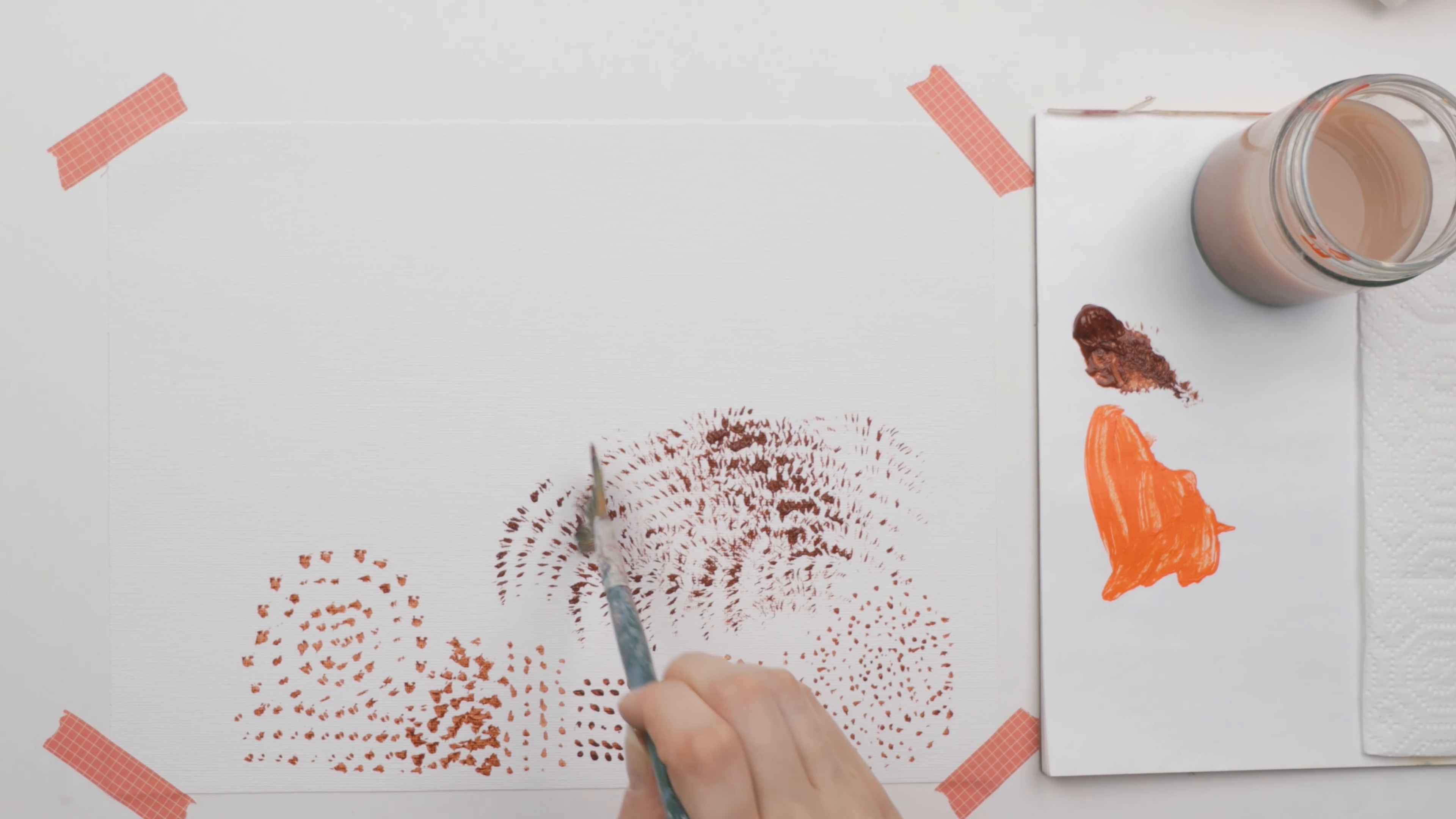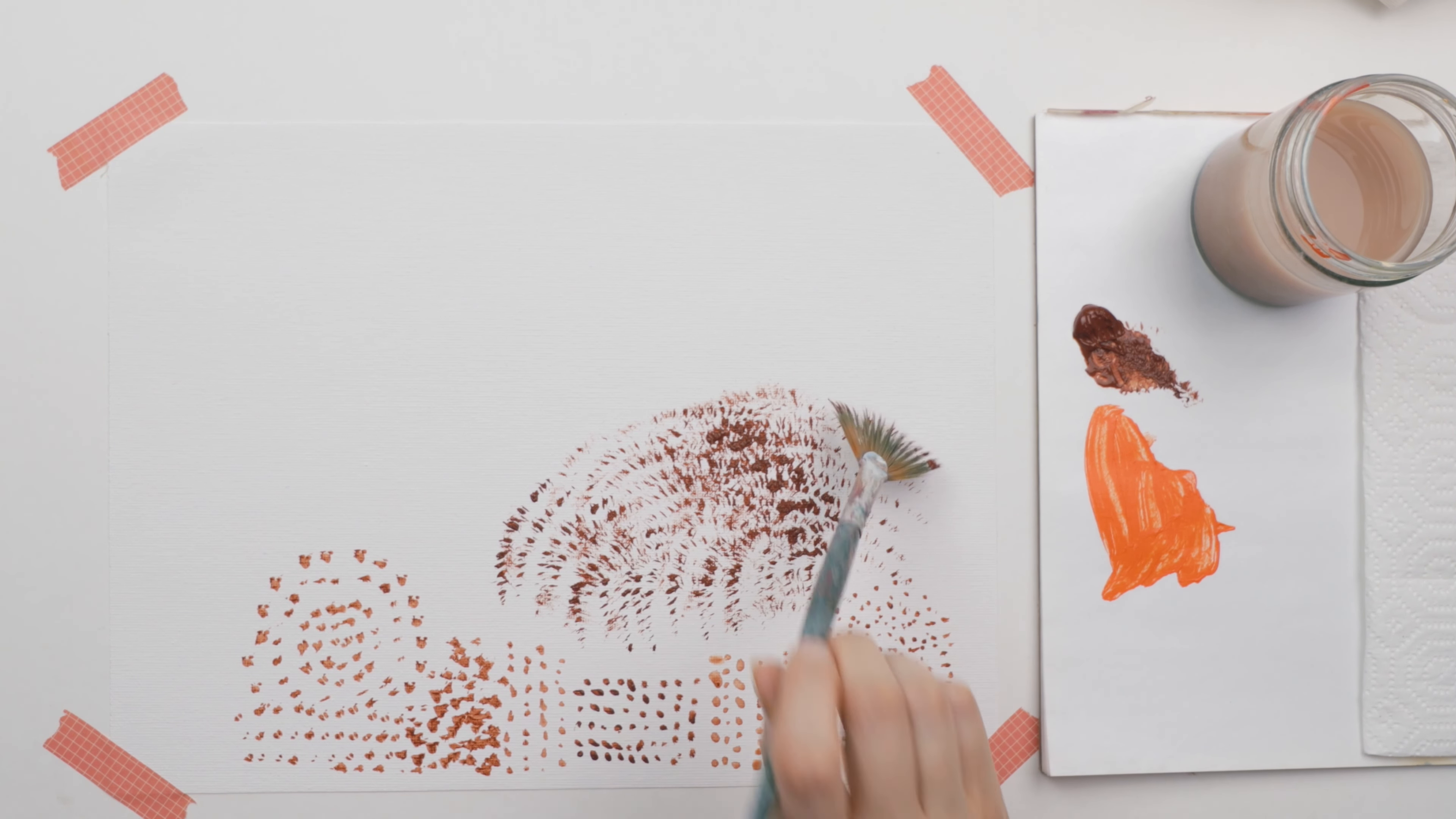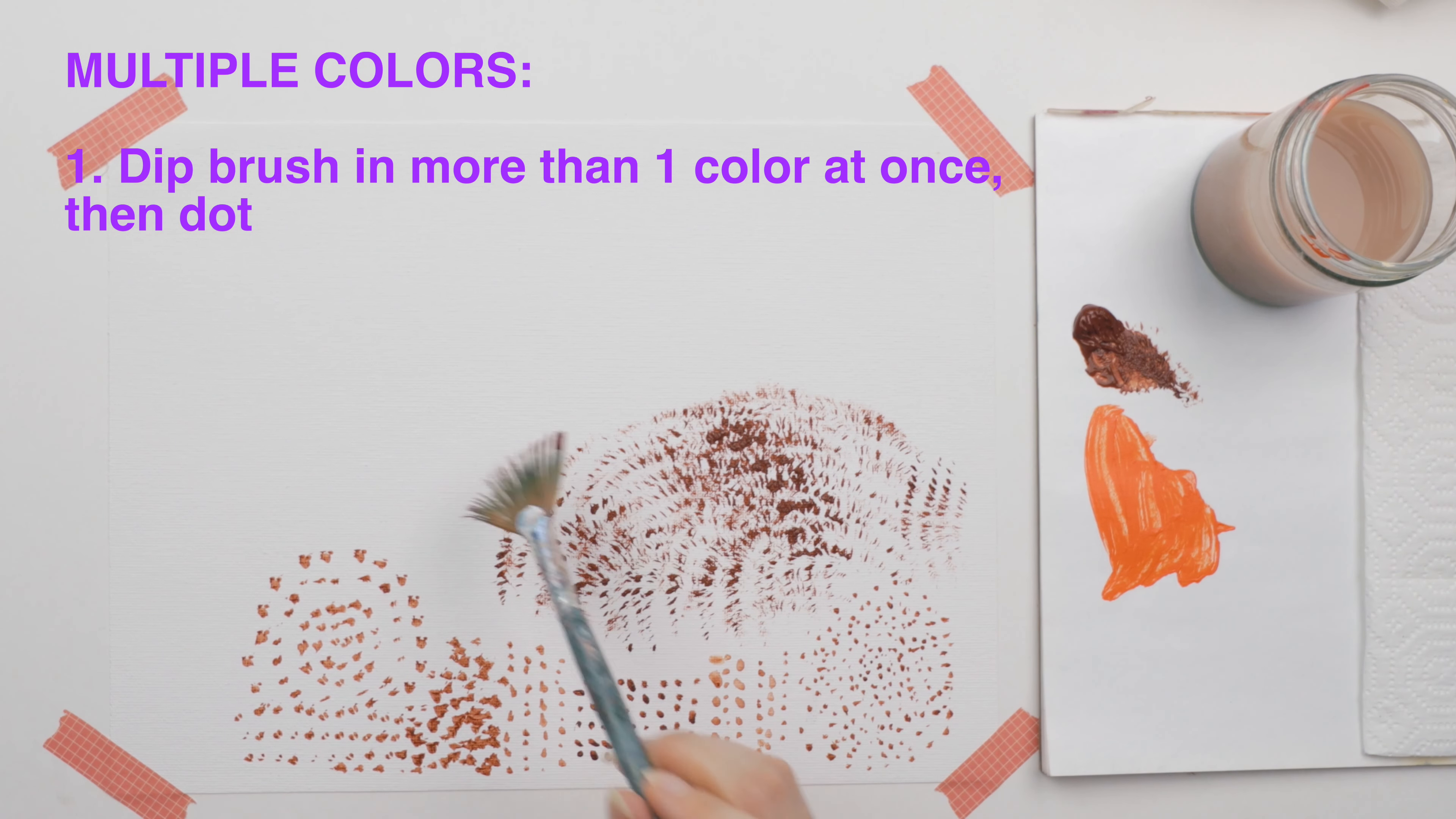And just a few tips, never let the paint become too runny or you'll really lose the detail of the dots. If you want to have multiple colors, you could dip your brush in multiple colors, like maybe two colors would be good. And then the colors would already be blended on the same brush.